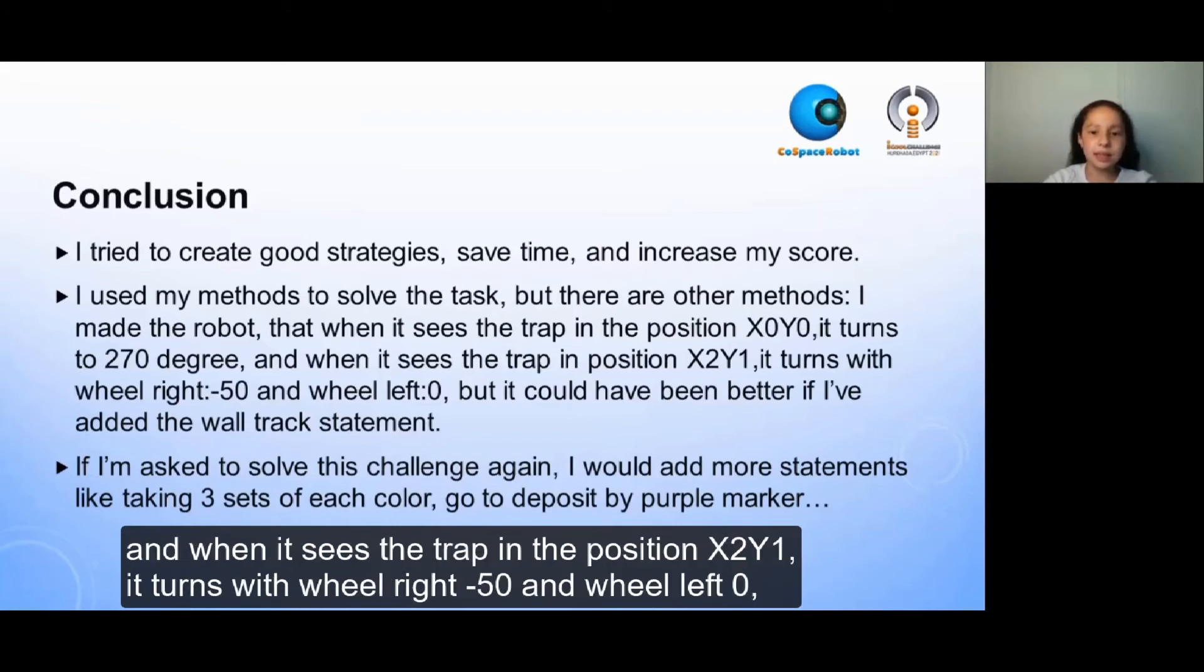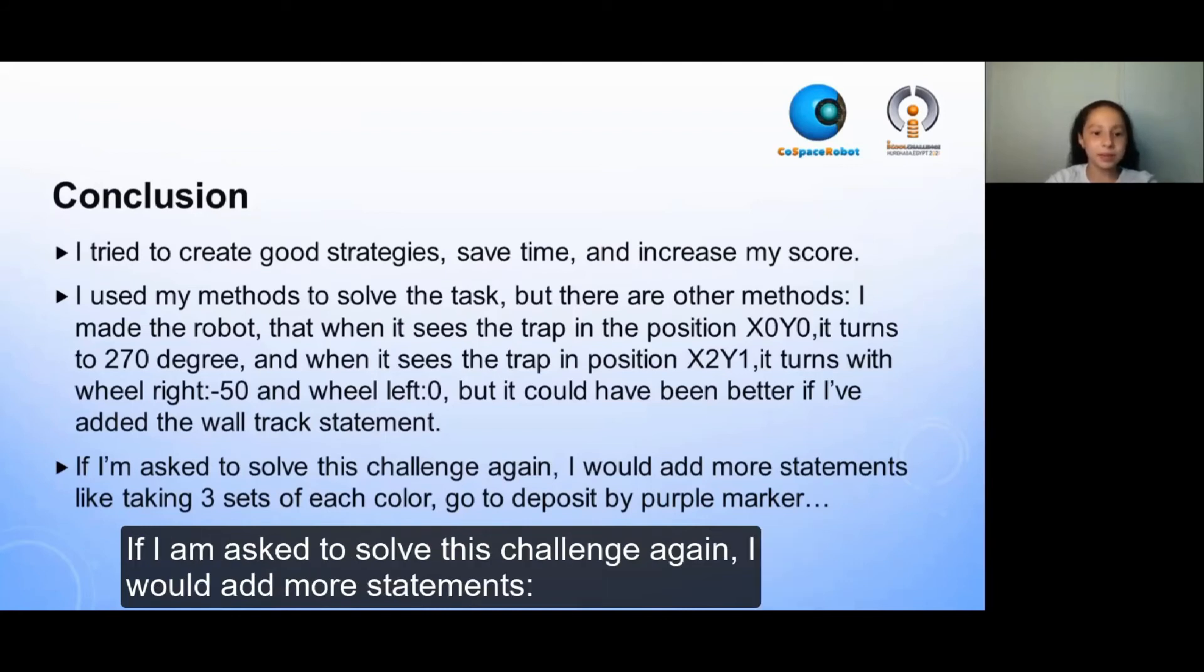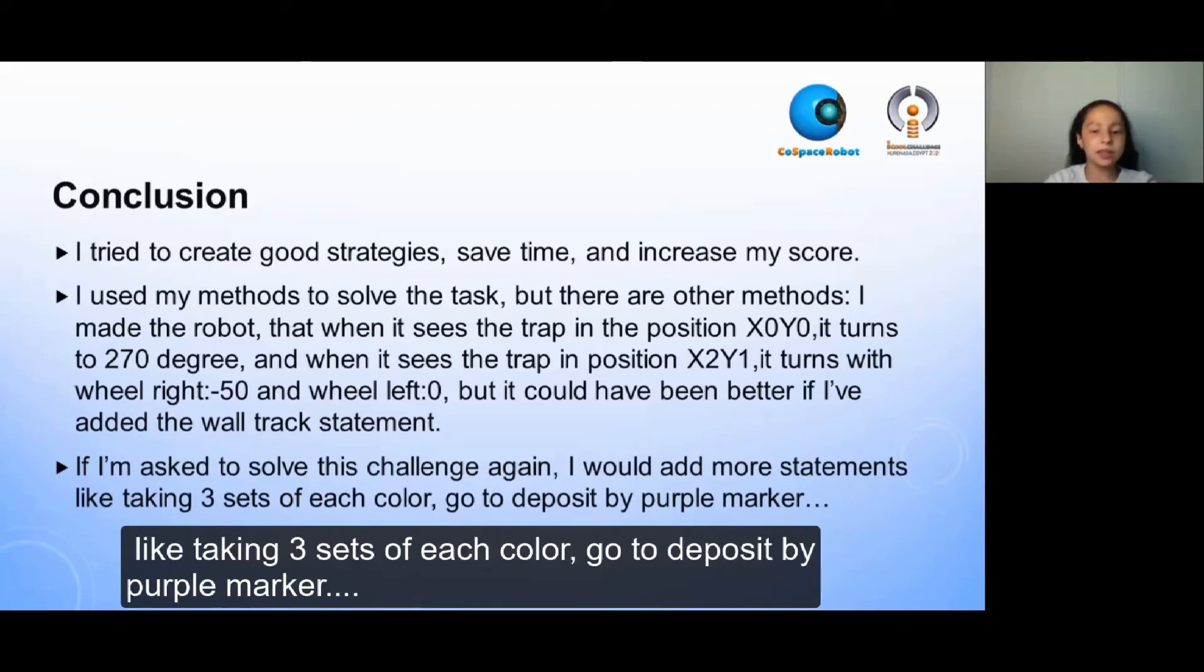And when it sees the trap in the position X2, Y1, it turns with wheel right negative 50 and wheel left 0. But it could have been better if I added the wall track statement. If I am asked to solve this challenge again, I would add more statements like taking three sets of each color or go to deposit by purple marker.